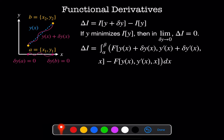Delta I is going to be the integral from alpha to beta of f of y plus delta y, y prime plus delta y prime, and x minus f of y, y prime, and x, all integrated over x.